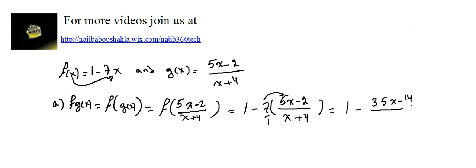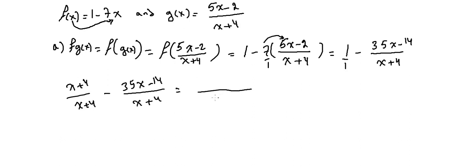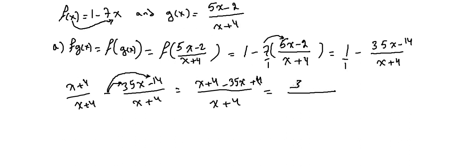The common denominator is x plus 4, so we multiply 1 by (x plus 4) over (x plus 4). We get (x plus 4) minus (35x minus 14), all over (x plus 4). Be careful — the minus applies to both terms, so minus 35x plus 14.